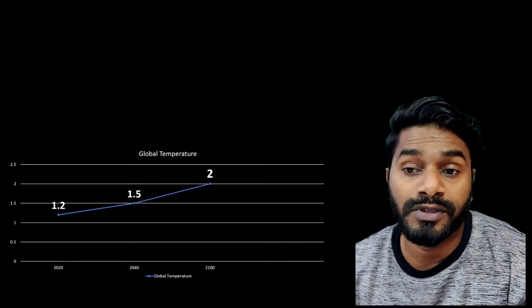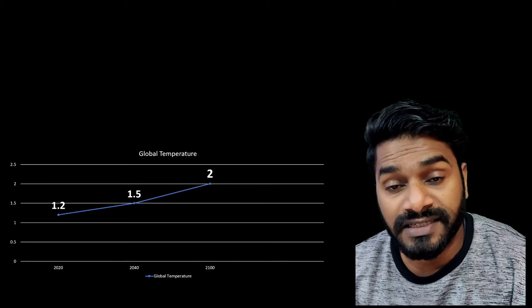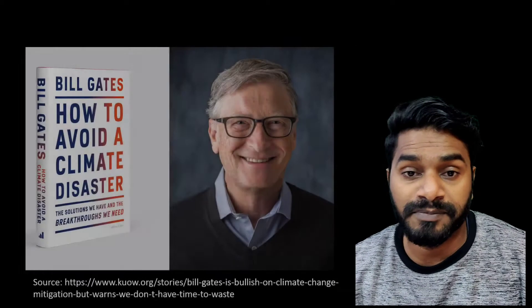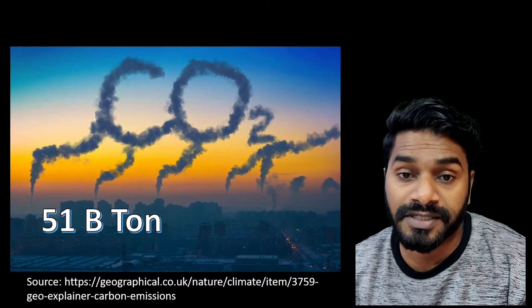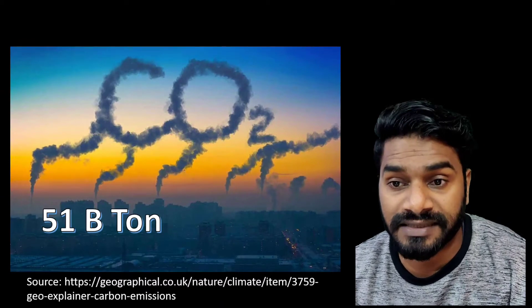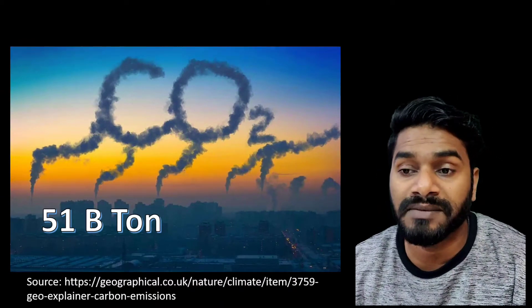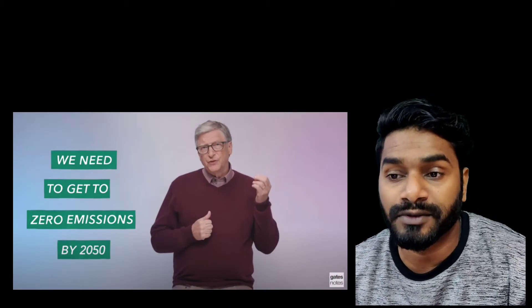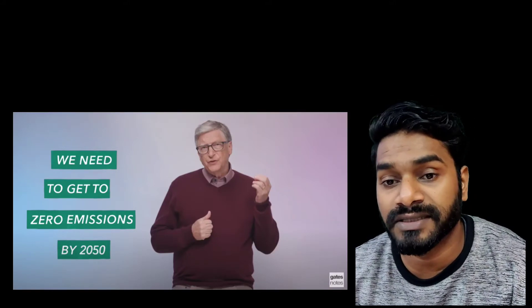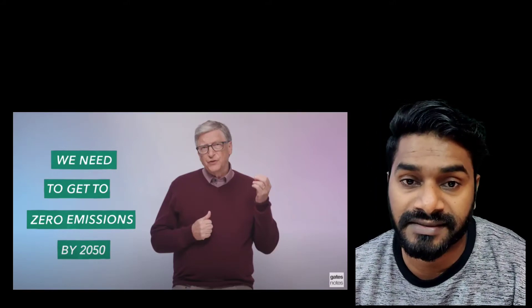A temperature increase of two degrees centigrade will be reached by 2100 unless effective and decisive actions are taken right now. From Bill Gates' book 'How to Avoid a Climate Disaster', the net CO2 equivalent emission per year is currently 51 billion tons. Simply reducing emissions won't help — we need to get to net zero, that is zero greenhouse gas emissions, and this will be the only chance to avoid a climate disaster.